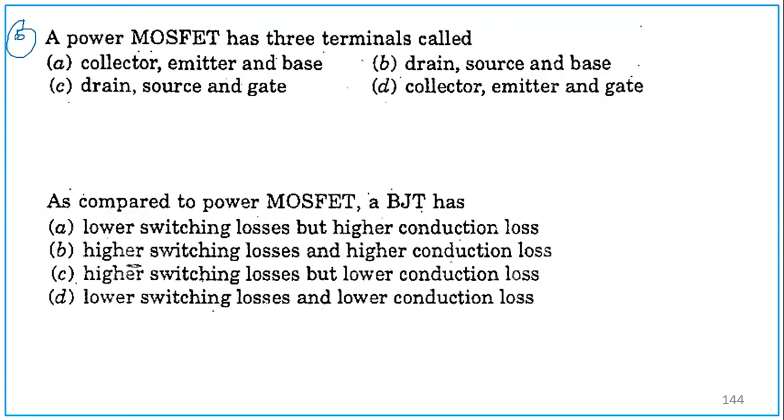Question number 5 is regarding MOSFET. Why I am making you do all these questions is this will give you a revision, or if you don't know the answer, you again need to go back and study the concept from the first 11 videos, because these concepts are required in the coming modules. A MOSFET has three terminals. What are they? MOSFET means drain, source, and gate. As compared to a MOSFET, a BJT has, you have to tell the properties of BJT not MOSFET. We are comparing MOSFET with a BJT. BJT has higher switching loss. That is why we are using MOSFET. But lower conduction loss. BJT has higher switching loss but lower conduction loss.